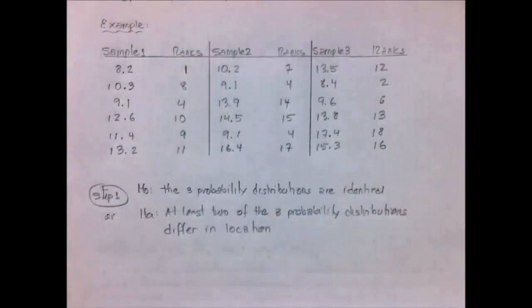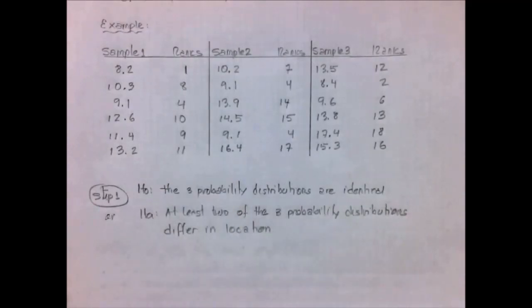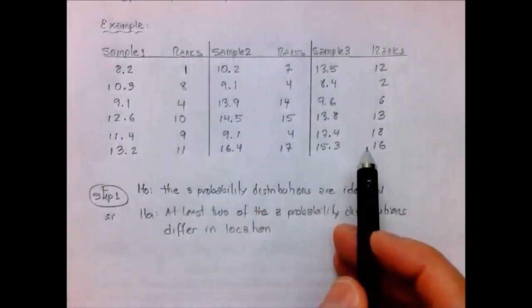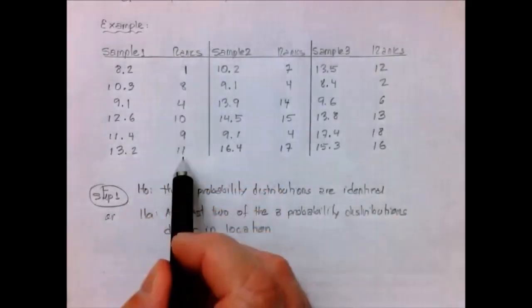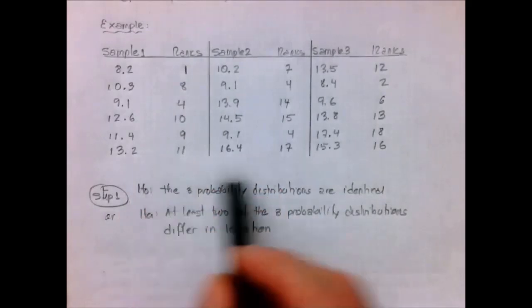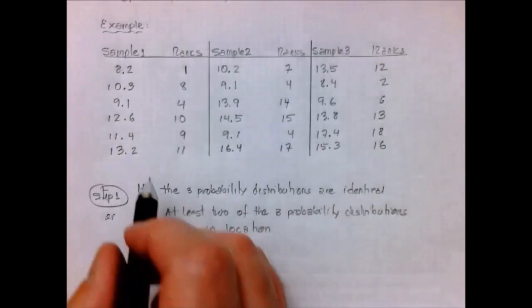So this is how it looks after we have transferred all the ranks to these columns. Now the next task is to add the ranks for the first sample, the ranks for the second sample, and the ranks for the third sample.